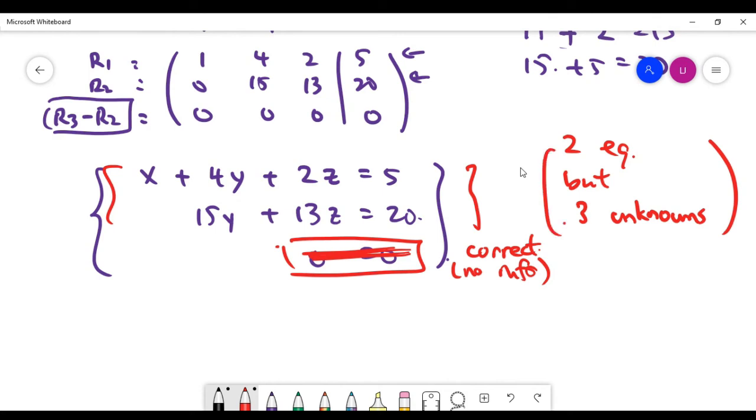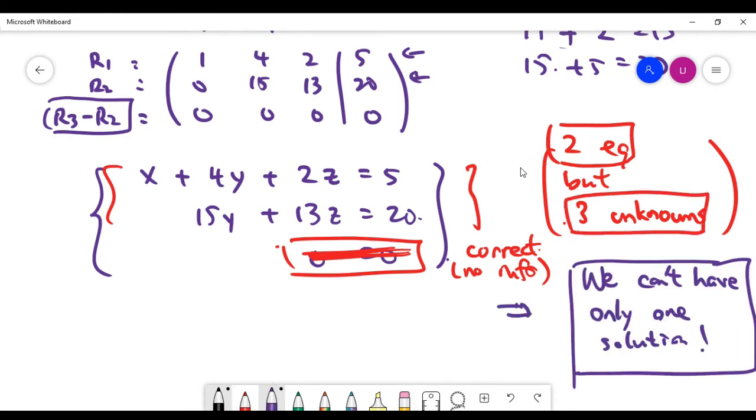Which means now we're actually left with only two equations, but we actually have three unknowns. And for such a system, there's no chance we can arrive at exactly one set of solutions, because usually to arrive at one set of solutions, we need the number of equations to be at least the same as the number of unknowns.